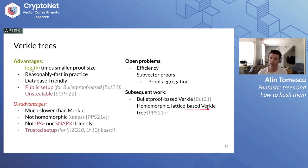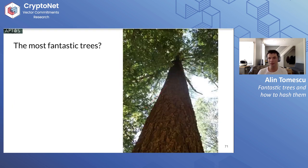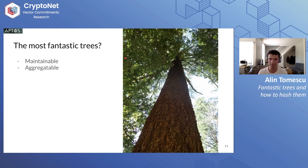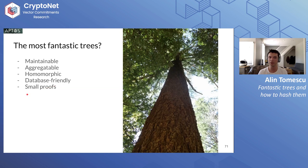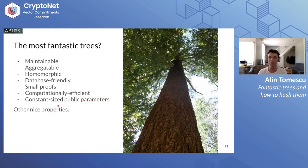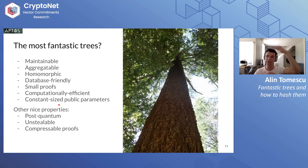To conclude: what is the most fantastic tree we hope to get? It has to be maintainable — some tree-based constructions have log-size proofs but the proofs are not easy to update. It has to have aggregation. Homomorphism is a good property for stateless cryptocurrencies. Database friendliness is also important. Small proofs and computational efficiency, concretely speaking. Constant-size public parameters, ideally. And other nice properties: post-quantum security, unstealability, and perhaps compressible proofs — taking a log-size proof and compressing it to constant size.